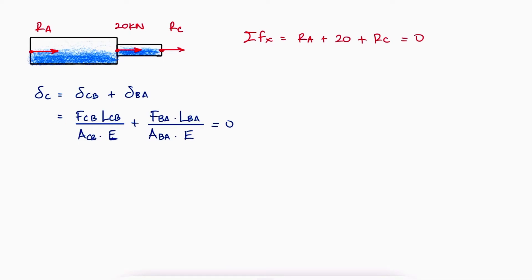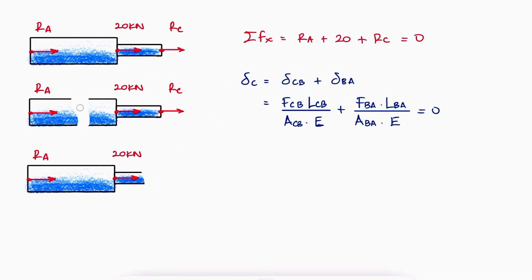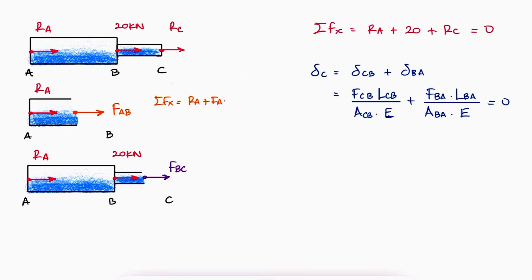With the free body diagram and always assuming positive reaction and internal forces, which follows the very important suggestion and explanation covered in the previous lecture, link below, we see that the internal force from A to B is minus RA and from B to C minus RA minus 20.